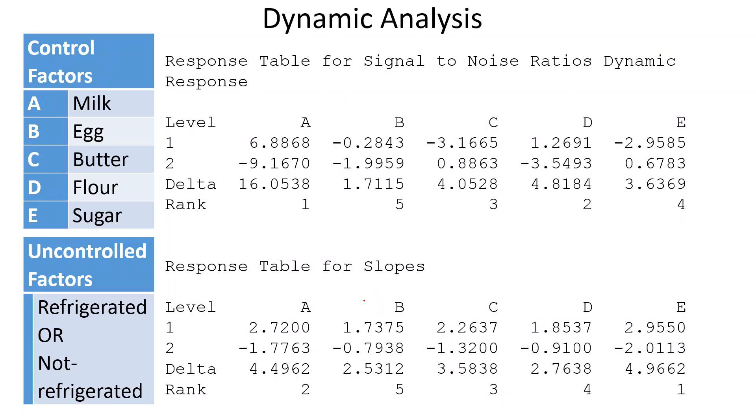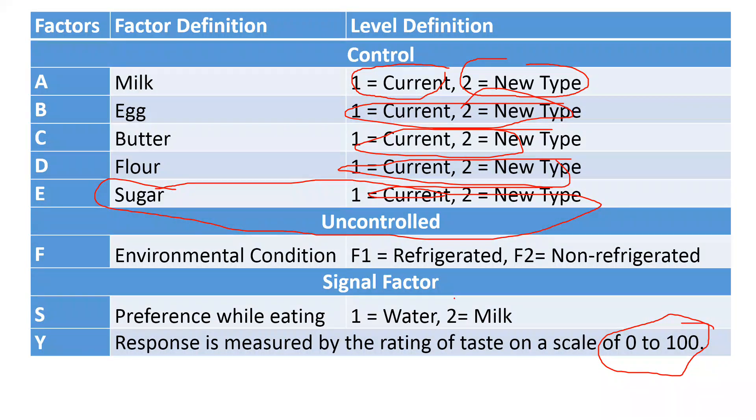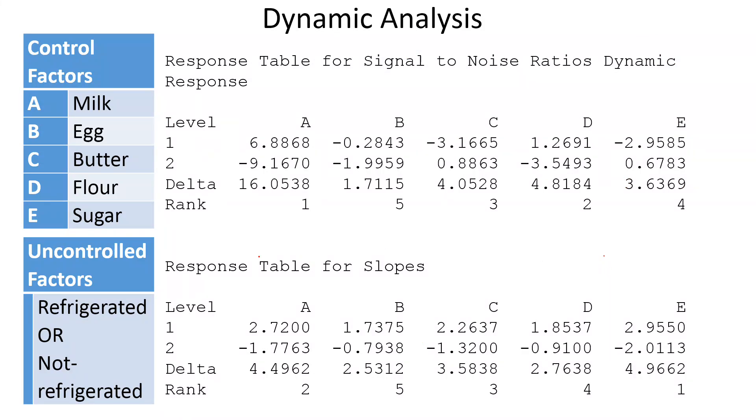Here I've done the dynamic analysis and included the signal factor, which was how the user is going to eat the cake - are they going to use water or milk? So here is the signal factor: are they going to use water or milk when they eat their cake? You can see the same signal-to-noise ratio table is produced, however these numbers are a little bit different.